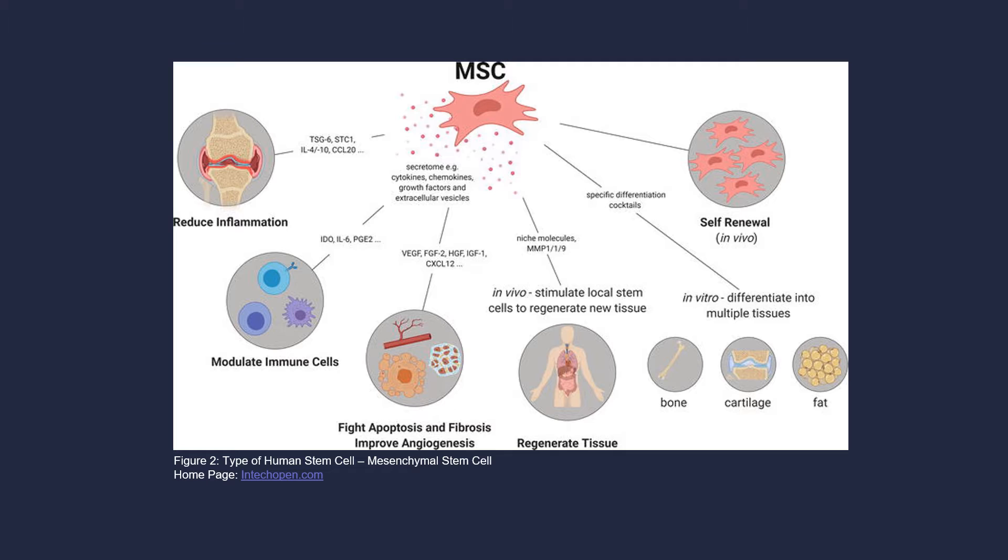Stem cells have properties that allow them to become many different cells in the body. Hematopoietic stem cells become blood cells and cellular blood components. Mesenchymal stem cells can be found in multiple different body tissues such as bone, cartilage, and fat. Bone marrow contains many hematopoietic stem cells that repair and regenerate damaged tissues.